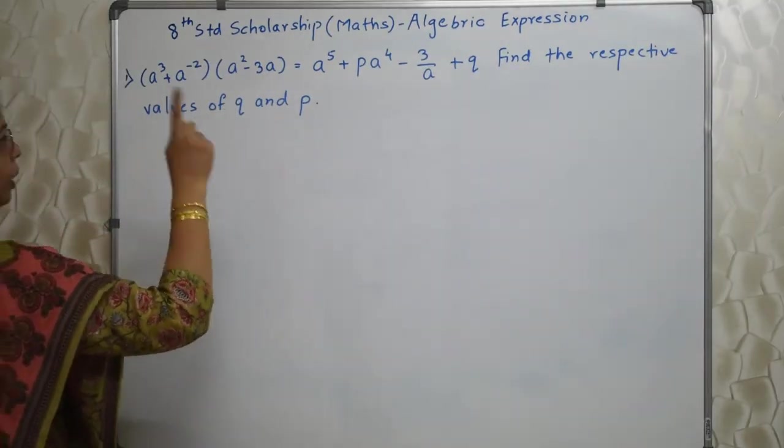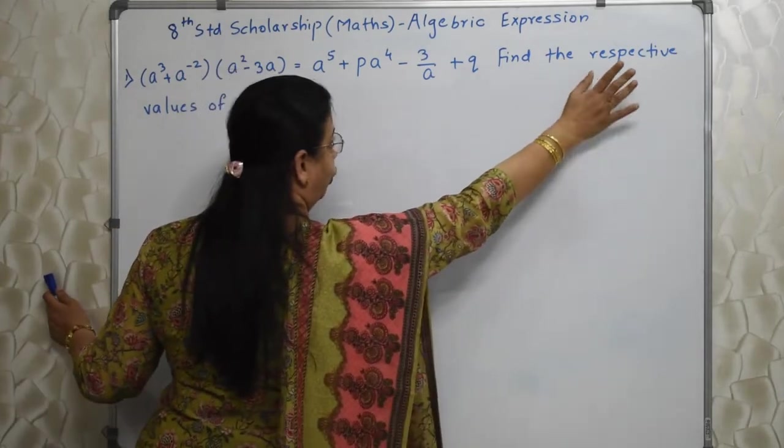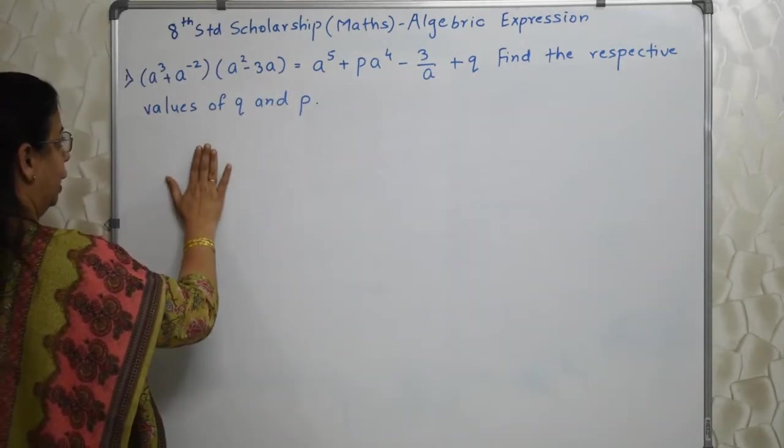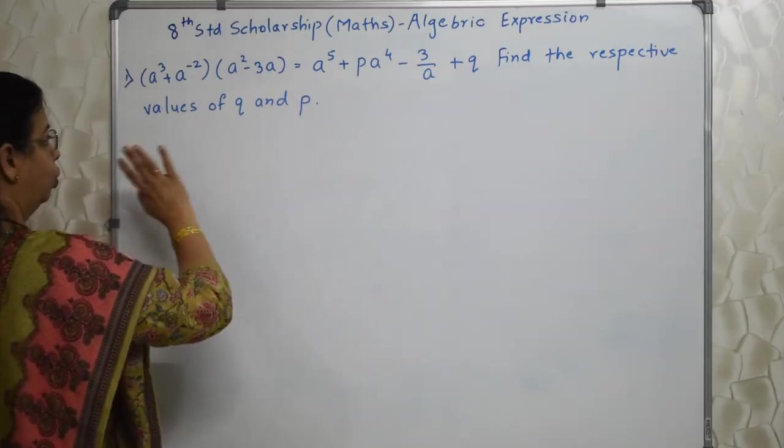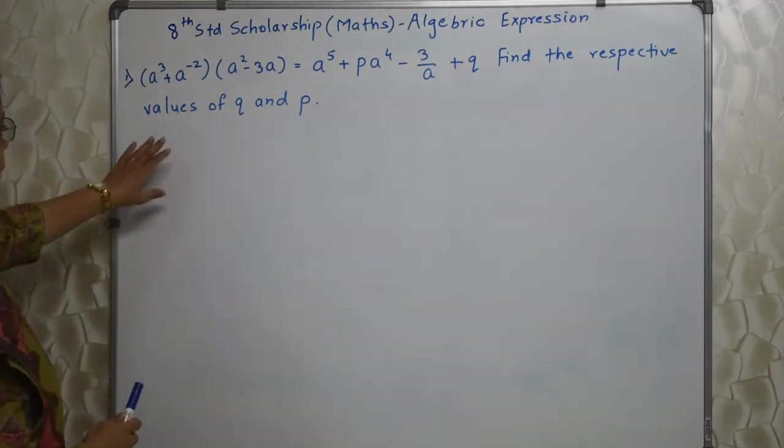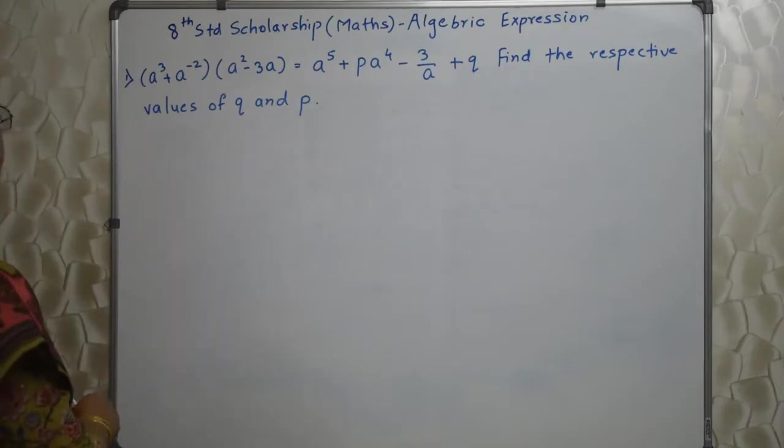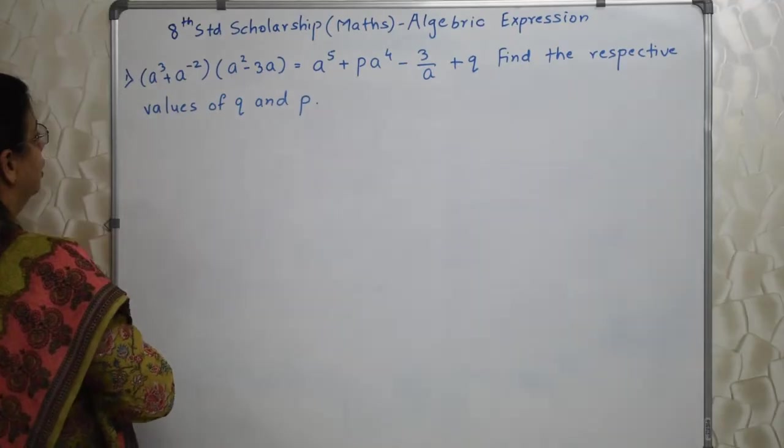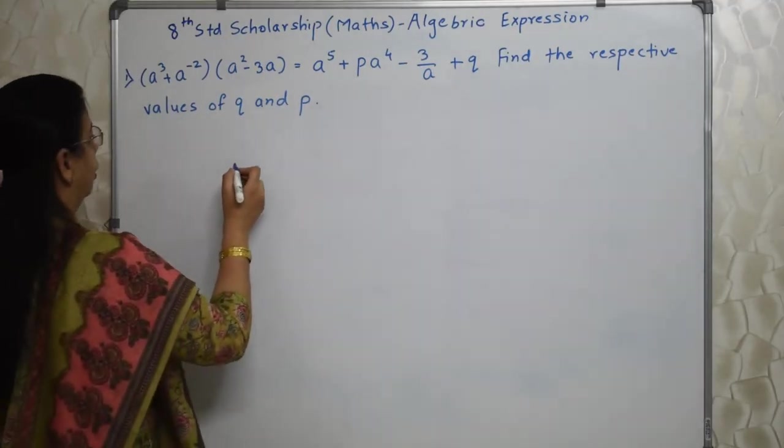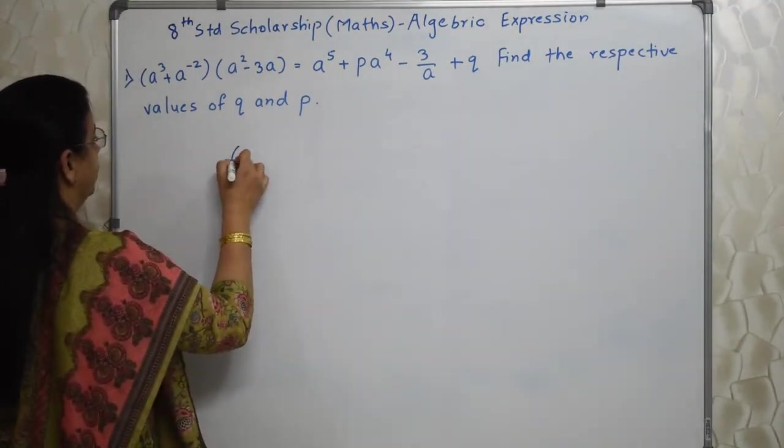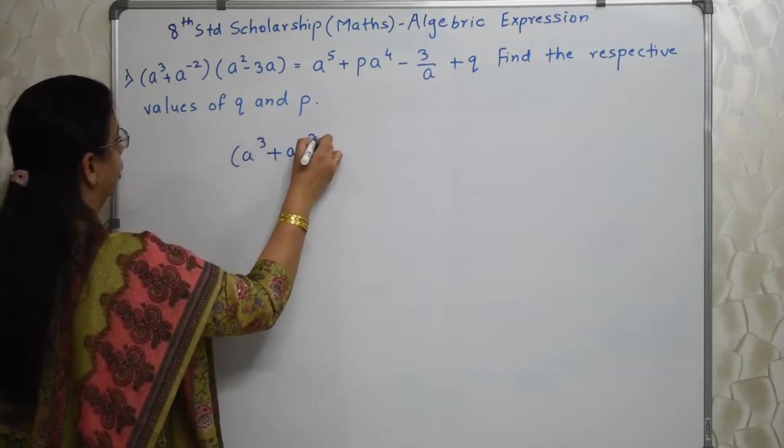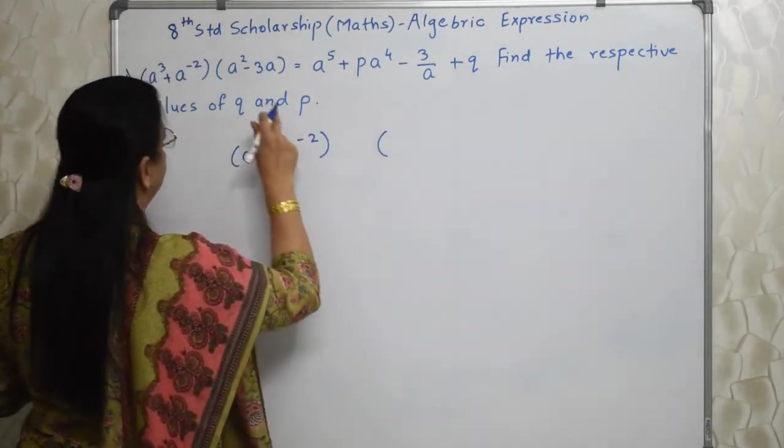Please give respect to this word respective. What do you mean by respective? Q ki value hi pahli likhni hai aur P ki baad mein. If you write ultra, two marks gone. So please be careful here. Let's begin. We need to multiply this and this. The easiest way of multiplication is repeat any one bracket twice because there are two terms.